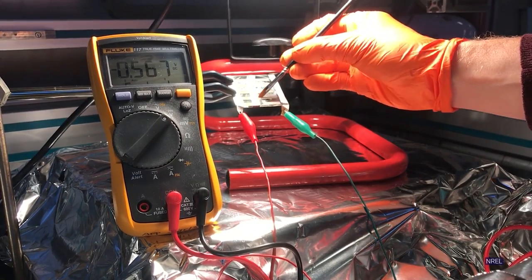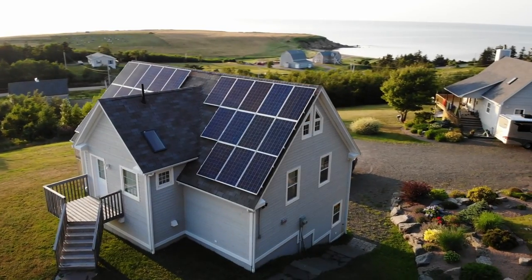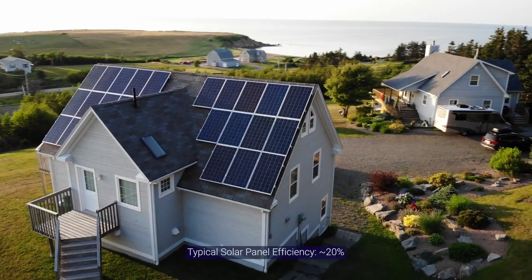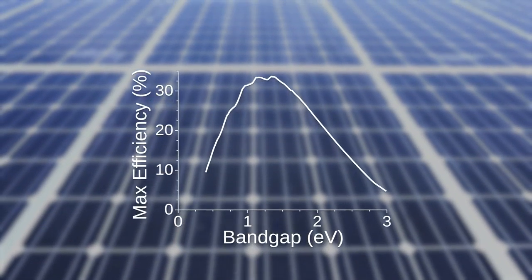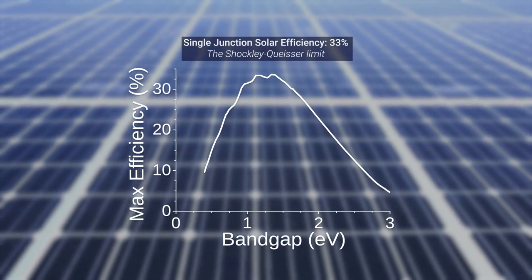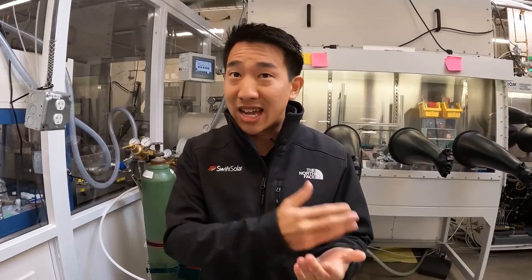So just how efficient are perovskite solar cells? The most efficient modern silicon solar panels you'd find on a home only work best at around 20 percent efficiency, but the theoretical conversion efficiency of single-junction solar technologies is about 33 percent, called the Shockley-Queisser limit. That's the fundamental limit for a single solar cell, single material-based solar cell. Perovskites are the exact same thing. Silicon, perovskites, cadmium telluride, CIGS, all of these technologies have the same limit.